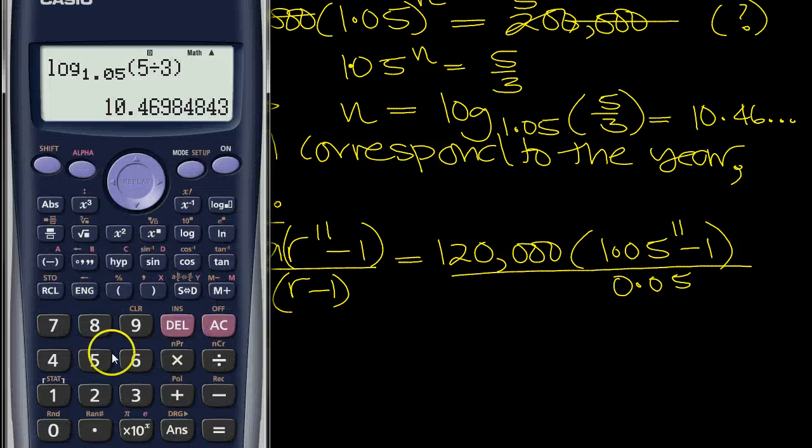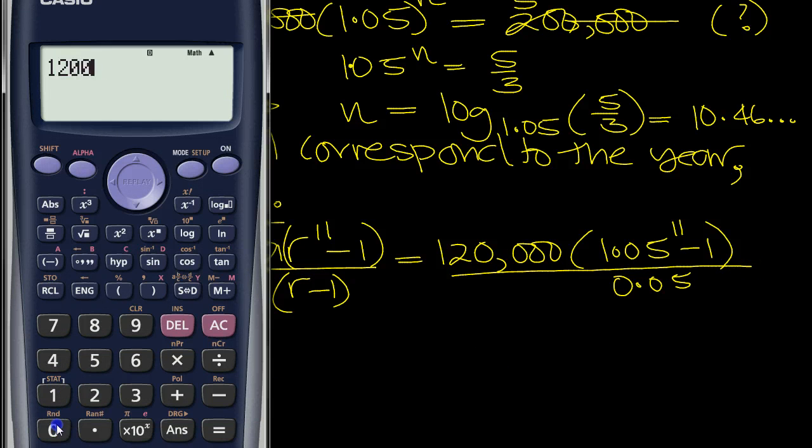Tap that in the calculator then. 120,000 times by bracket 1.05 to the power 11 down to ground level minus 1. Closed bracket divided by 0.05.